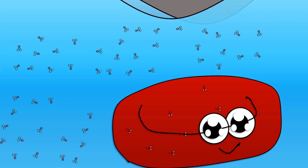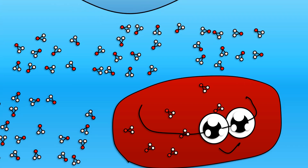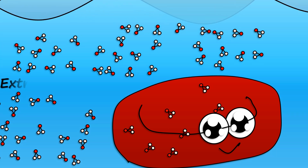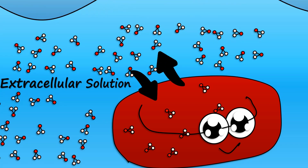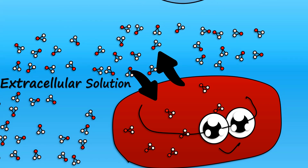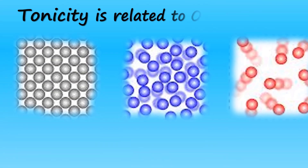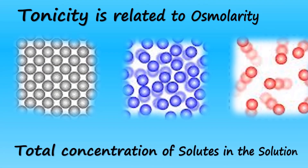If a cell is immersed in water, the cell contains water molecules inside it as well as in its surrounding. The ability of the surrounding extracellular solution to make the water molecules move into or out of the cell by osmosis is known as tonicity. A solution's tonicity is related to osmolarity, which is the total concentration of all the solutes in the solution.